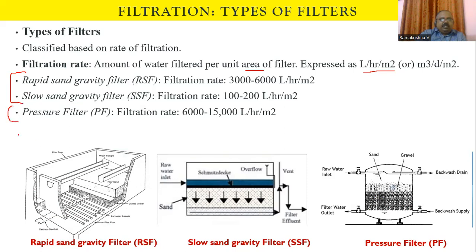The filtration rate for a rapid sand filter is around 3,000 to 6,000 liters per hour per square meter. For a slow sand gravity filter, you can apply only 100 to 200 liters per hour per square meter. For a pressure filter, the rate goes up to 6,000 to 15,000 liters per hour per square meter.